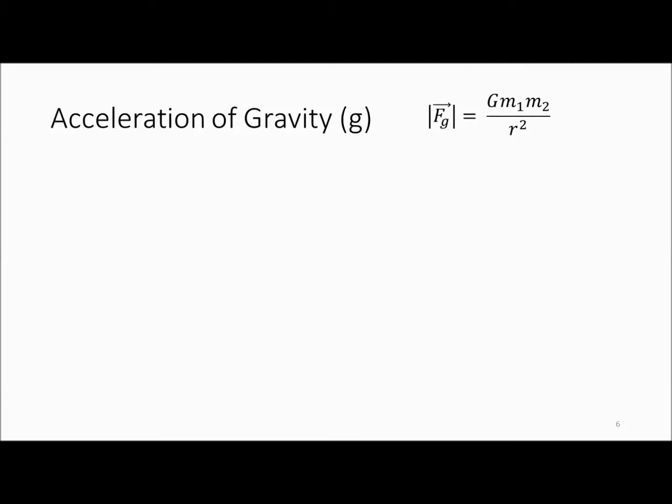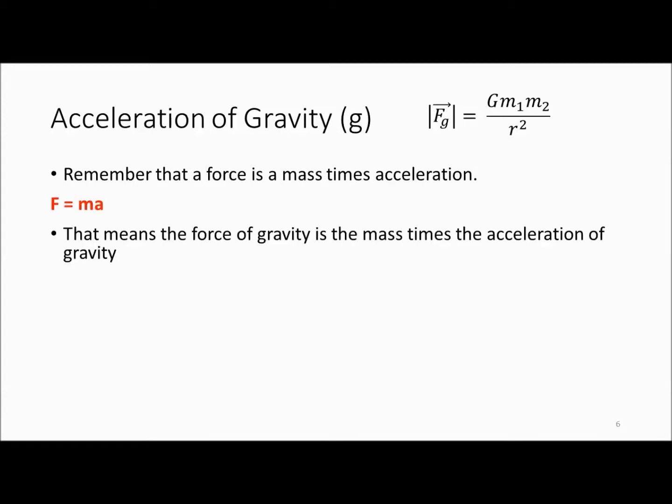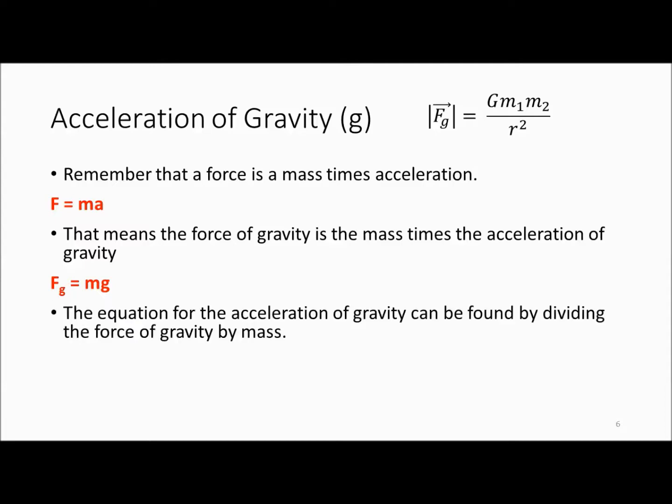So let's talk about the acceleration of gravity. Let's remember that a force is mass times acceleration. So that means the force of gravity is going to be the mass times the acceleration of gravity. We've used this before. Well, sometimes g is not 9.8 meters per second squared. So if we're going to consider different radiuses and possibly different masses, we're going to come up with a general rule for what the acceleration of gravity is.